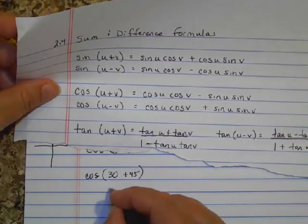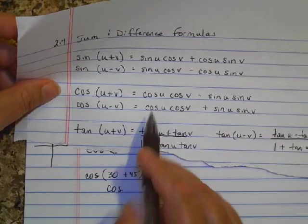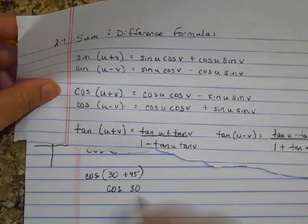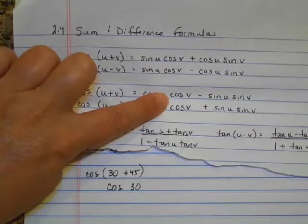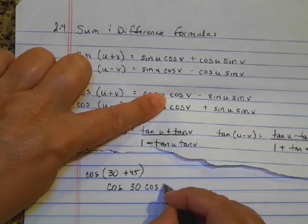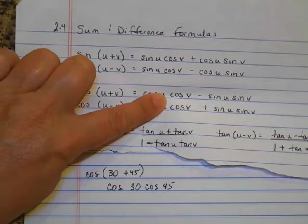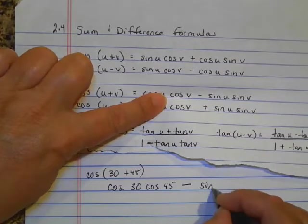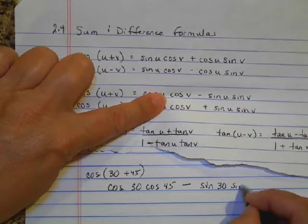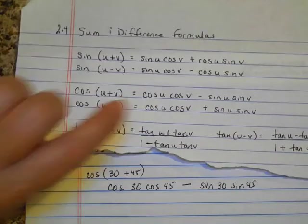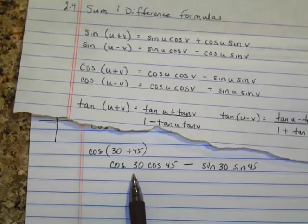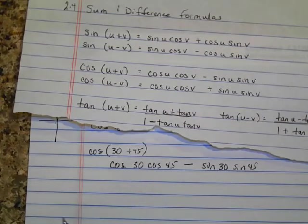I'm just going to follow that formula. So I'm going to have cosine of the first number, and my first number is 30, times cosine of the second number, and my second number is 45, subtract sine of the first number, and sine of the second number. So this is doable because 30 and 45 are both on the unit circle.